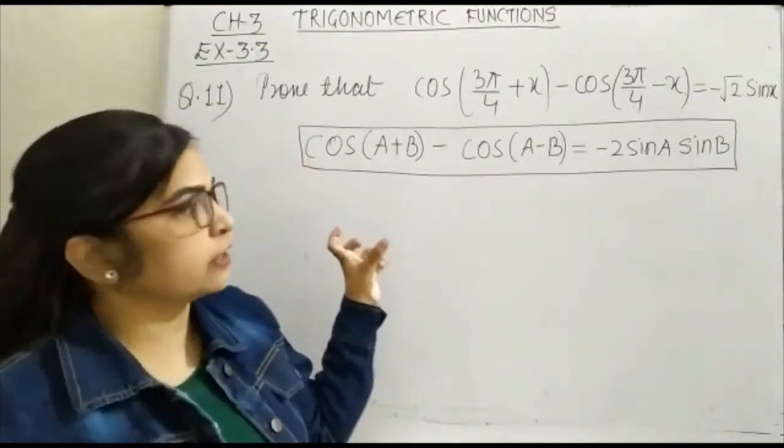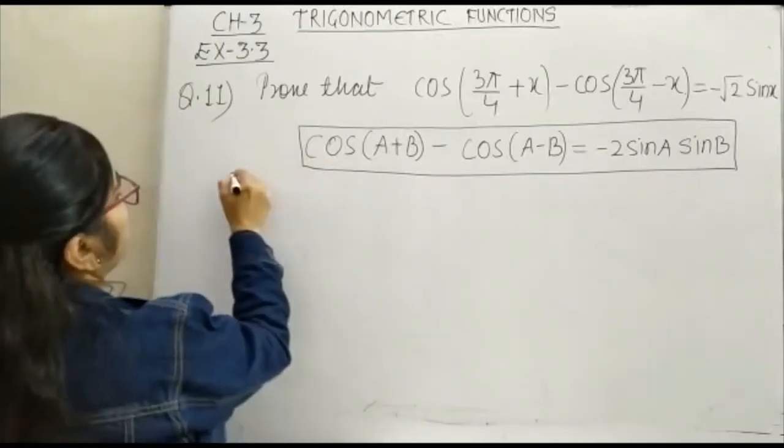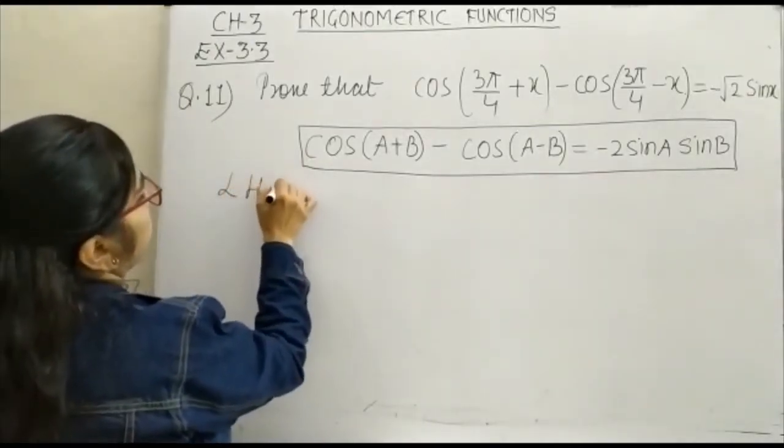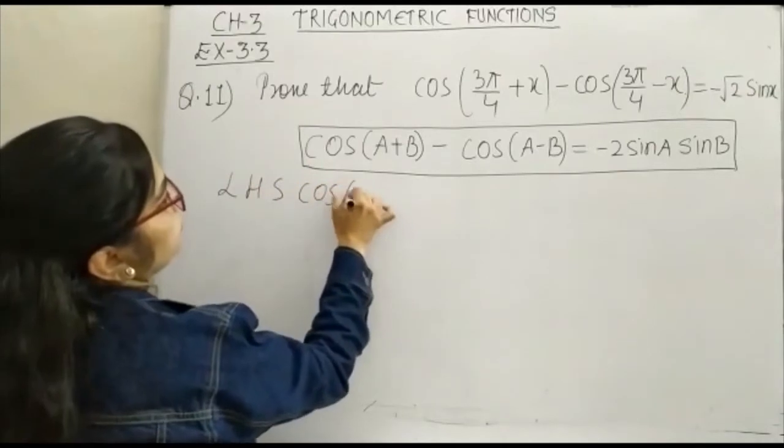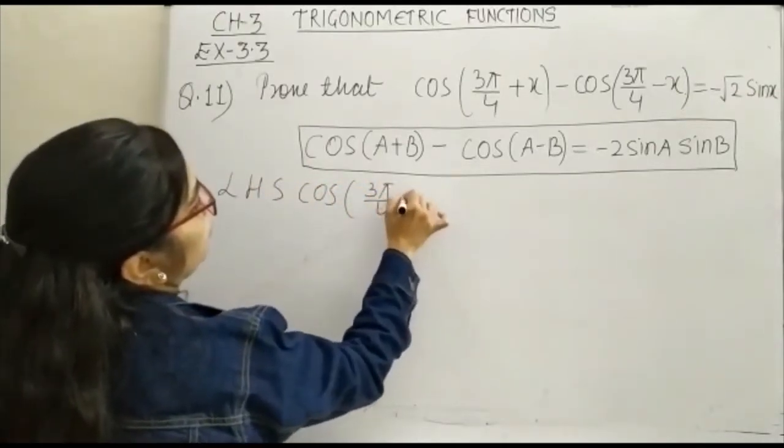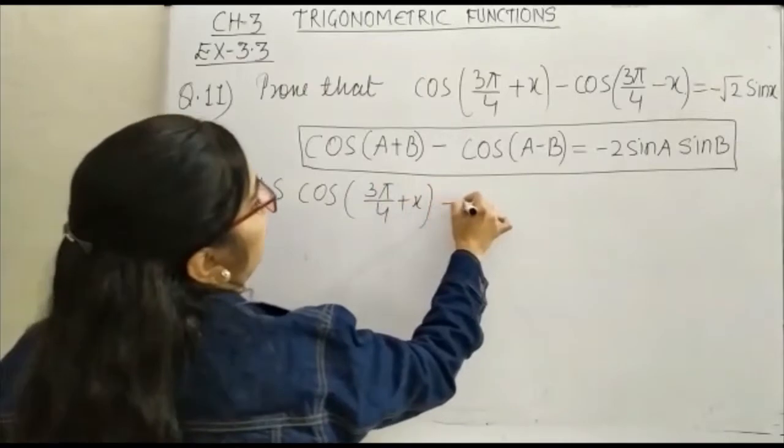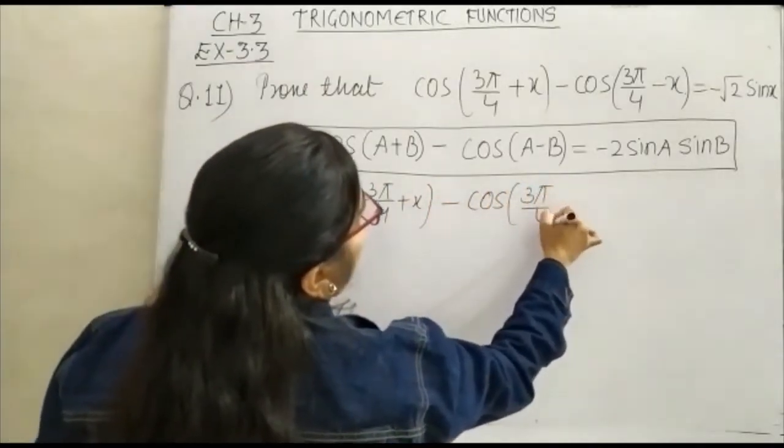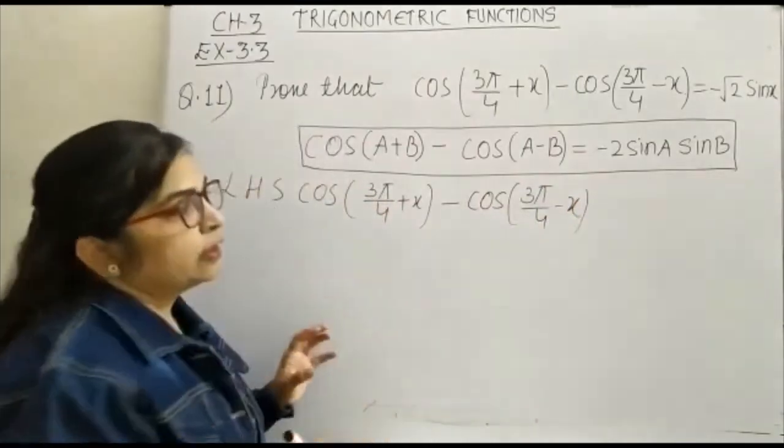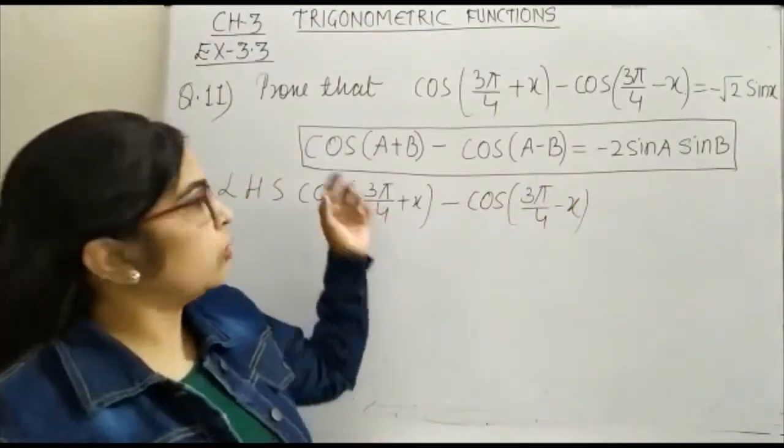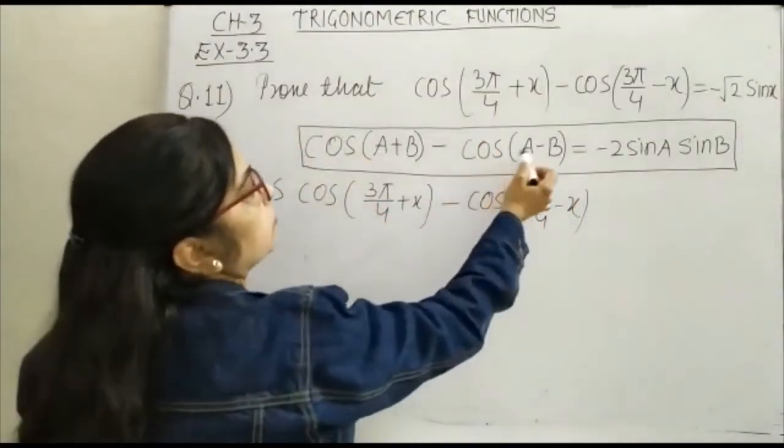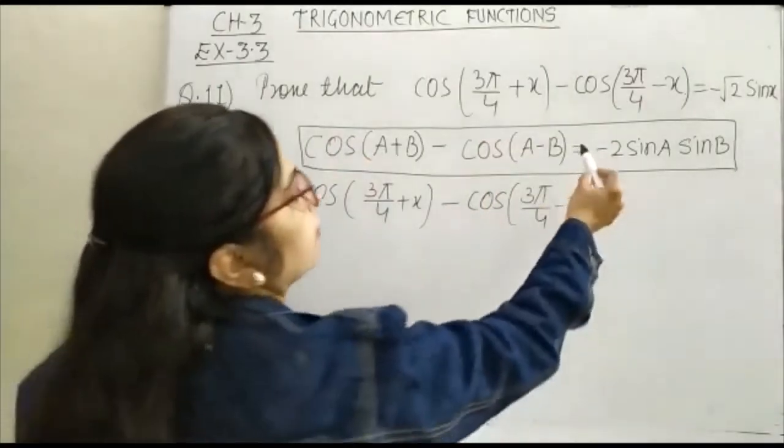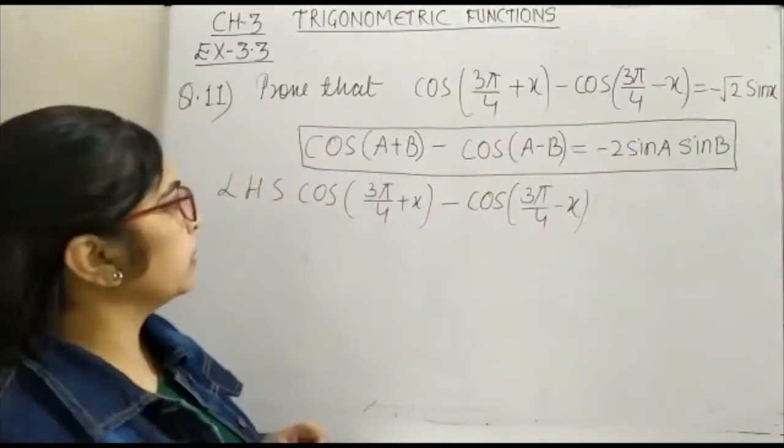First of all we have left hand side. We will take the left hand side, here it is LHS that is cos(3π/4 + x) minus cos(3π/4 - x). We are having the formula cos(A+B) minus cos(A-B) is equal to minus 2 sin A sin B.